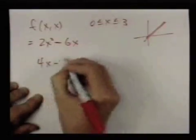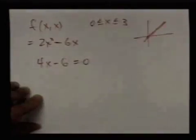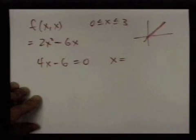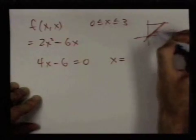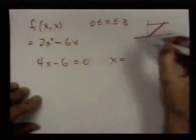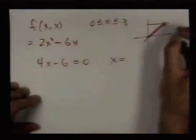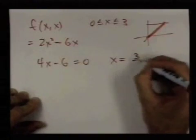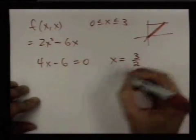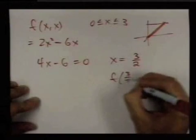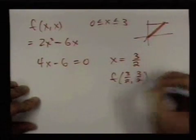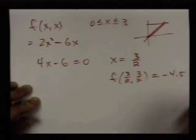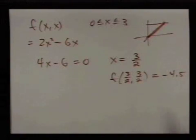We get 4x-6, set that equal to 0, and we see that a critical point of this one-variable function would have to be x=3/2. Plugging this into f, you can check for yourself that you get -4.5. So in the end we have this list of values that we came up with: a critical point on the inside and all the boundary pieces with critical points and endpoints.